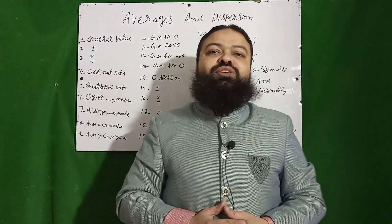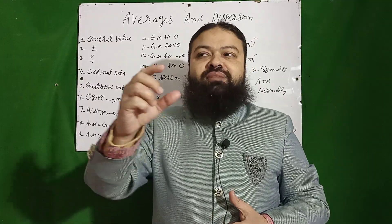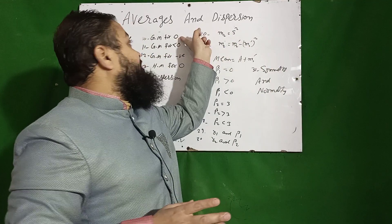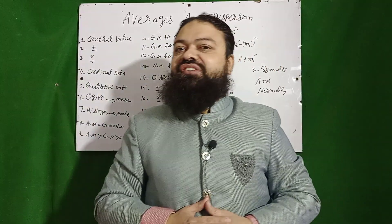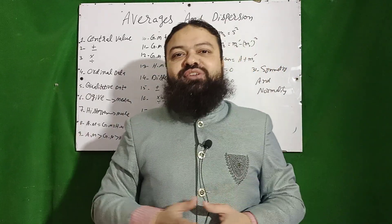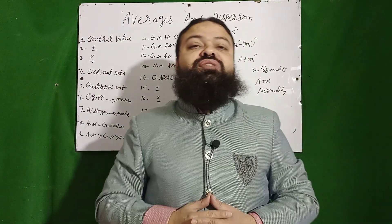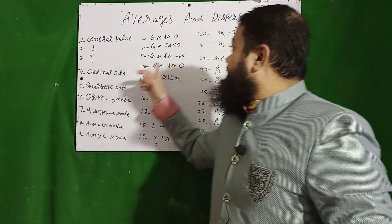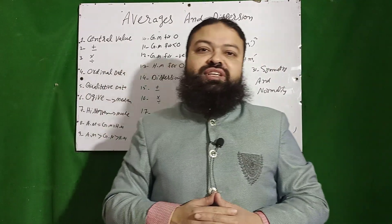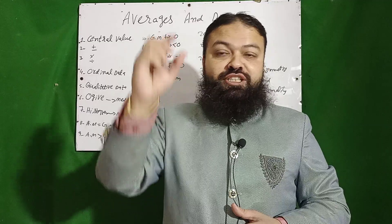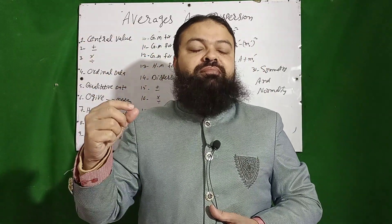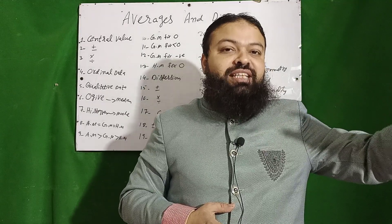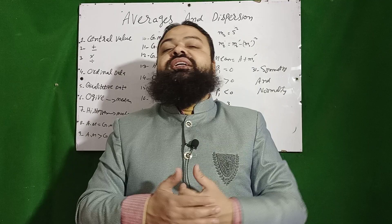If any value of the data set is zero: in geometric mean we multiply all values and take the root, so when zero is multiplied with any value the answer is zero — meaning if any value is zero, geometric mean is zero. If any value is negative, geometric mean cannot be calculated. For harmonic mean, we take the reciprocal; the formula for two numbers is 2ab/(a+b). If any value is zero, harmonic mean cannot be calculated at all — unlike geometric mean which becomes zero, harmonic mean is undefined.